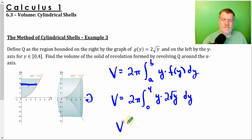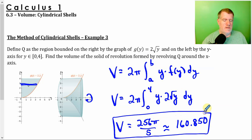And that's it. If you want, again, do it by hand. If you do it by hand, you get, I think it's 256π/5. If you put it on your calculator, you get 160.850.